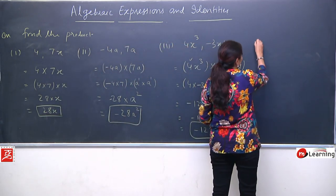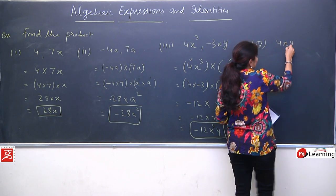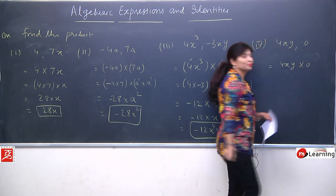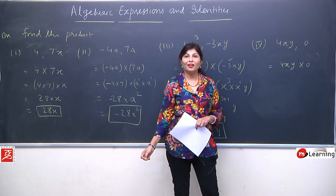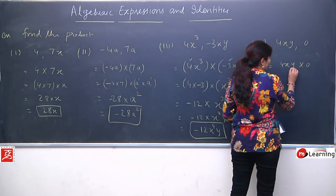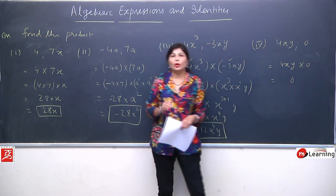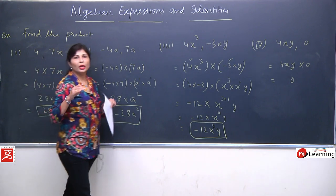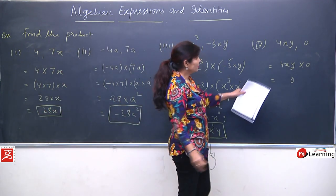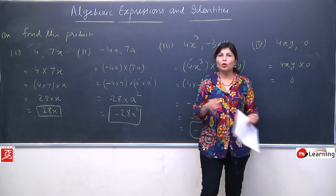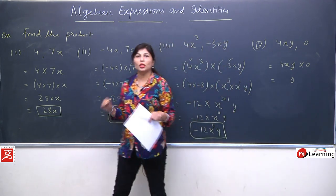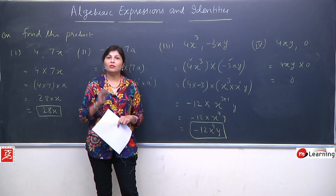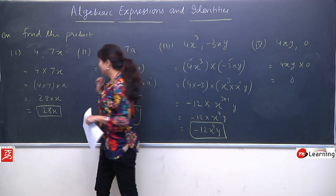Fourth example — a very simple one: find the product of 4xy and 0. We write 4xy multiplied by 0. What is the answer? If something multiplies by 0, the answer is 0. No need to look at the numbers or variables. It doesn't matter if it is a variable, a number, large, small, negative, positive, rational — if multiplied by 0, the result is always 0.